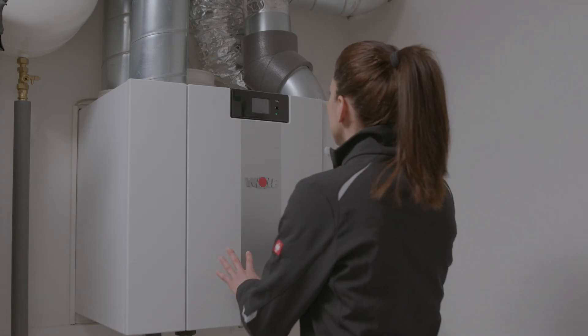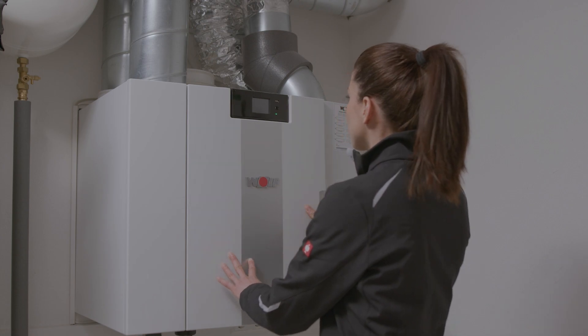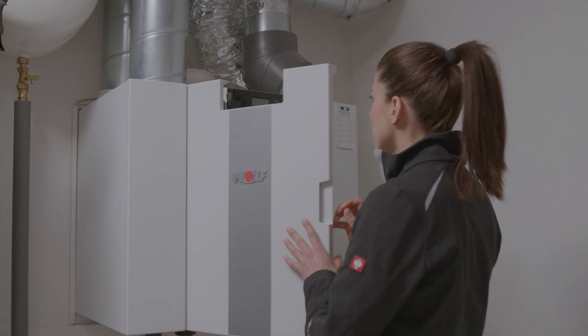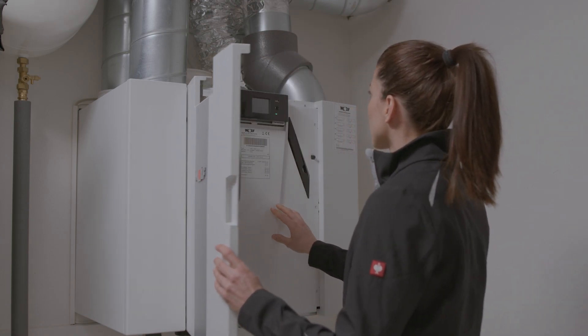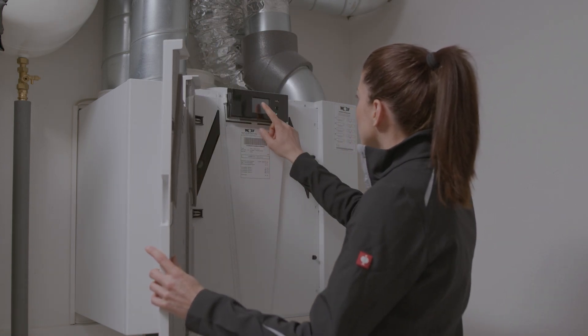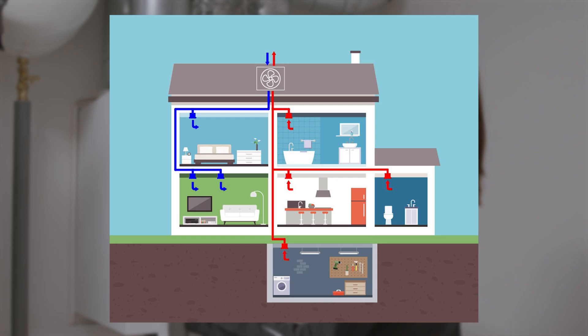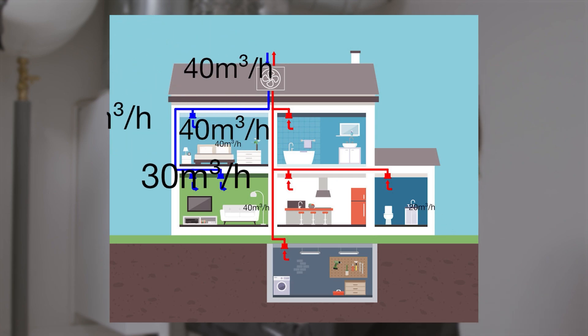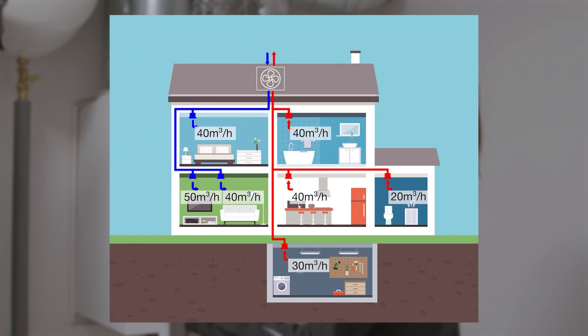A nominal output with total volume flow is defined for a ventilation system. The ventilation plan shows how this is distributed to the supply and exhaust air outlets in the individual rooms.